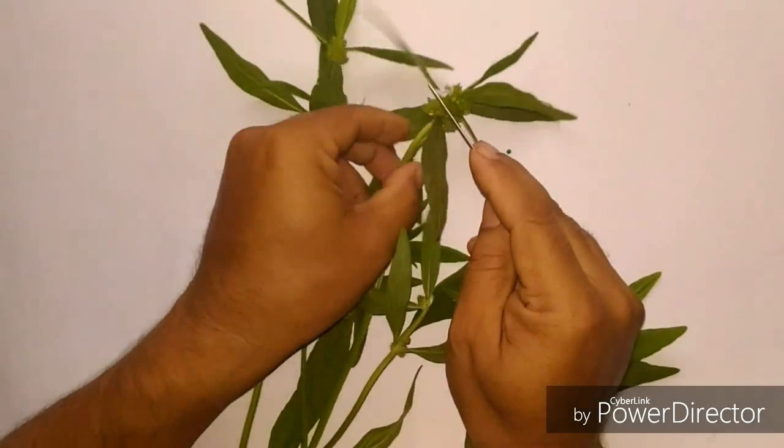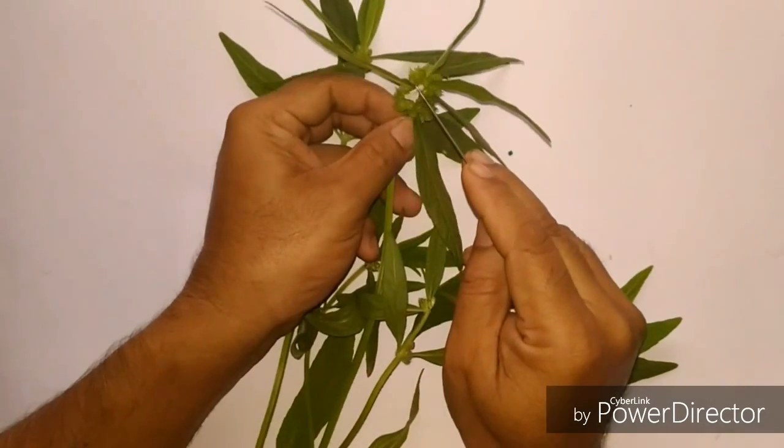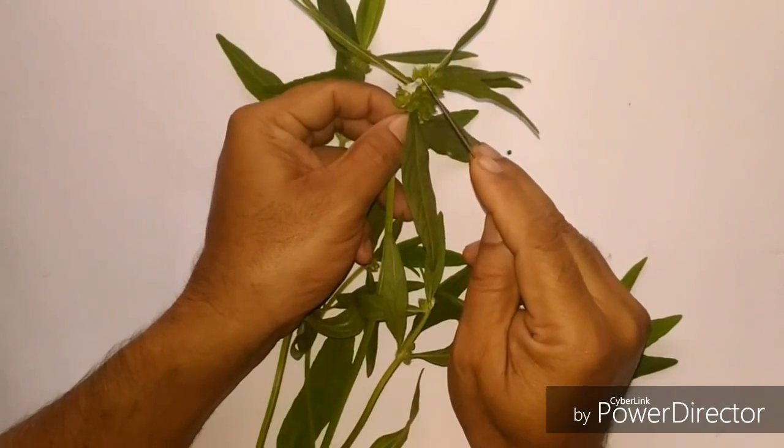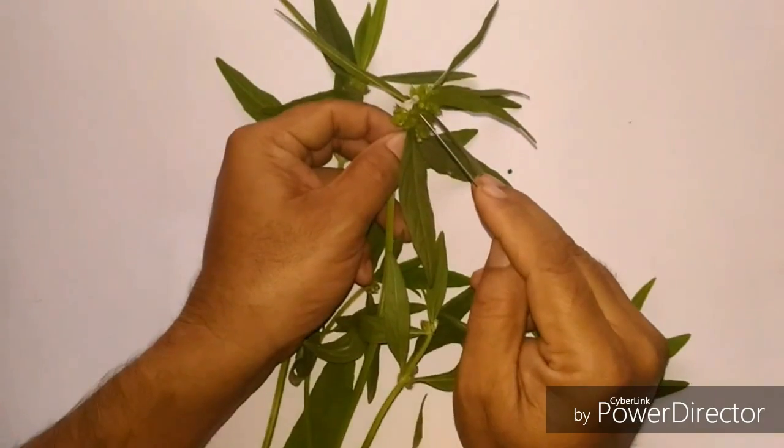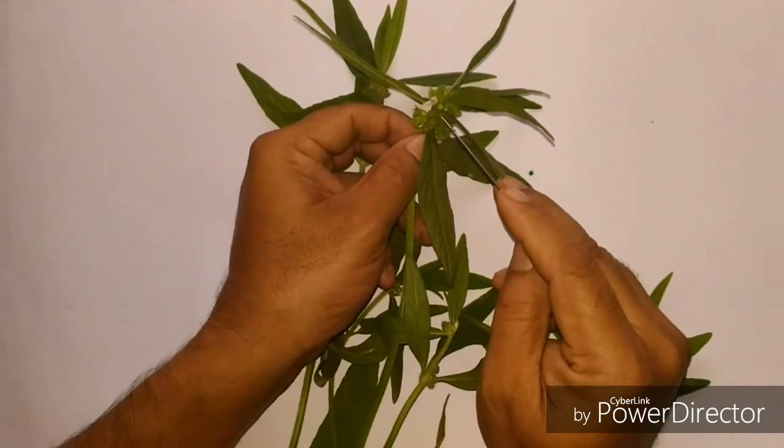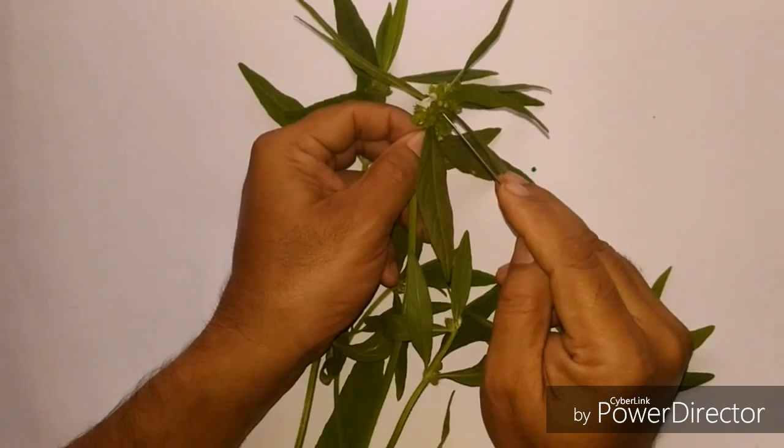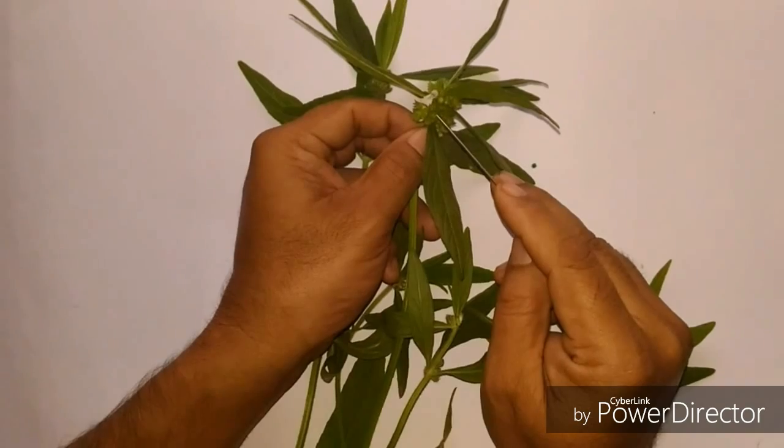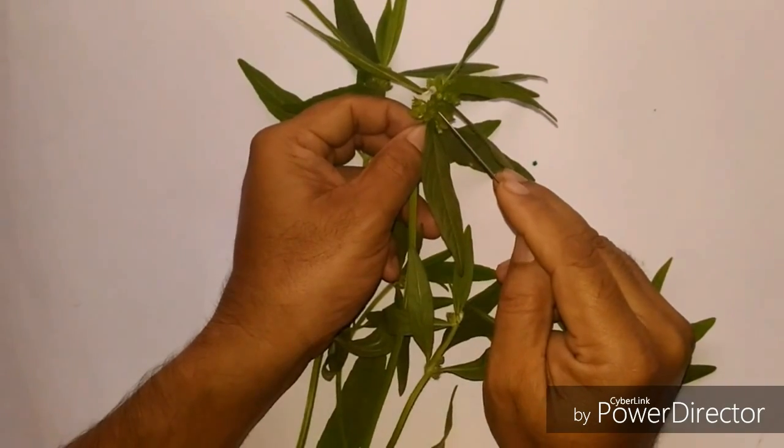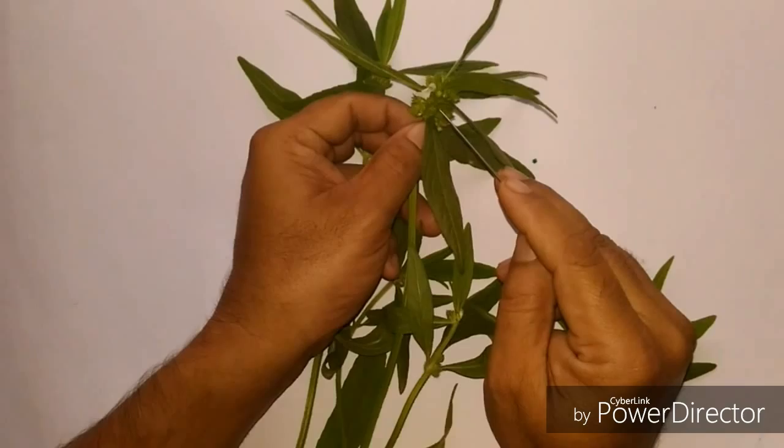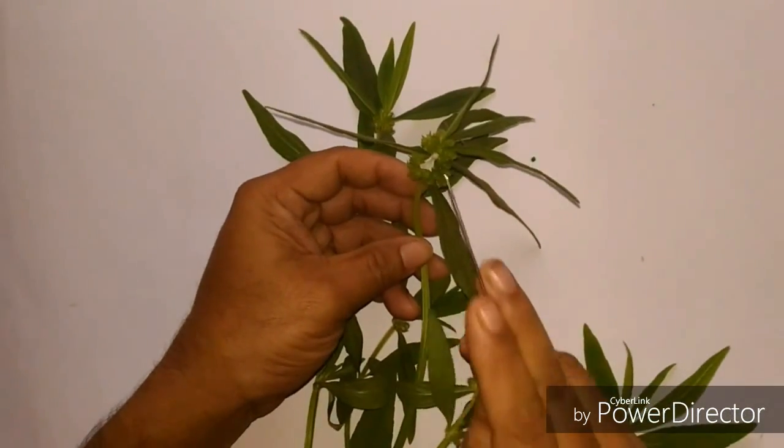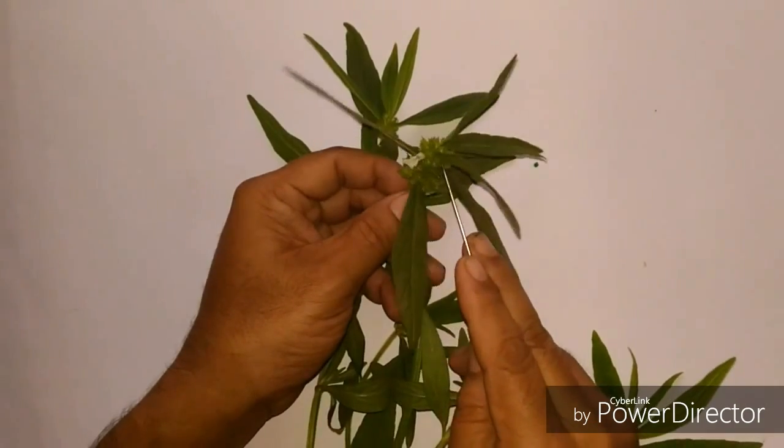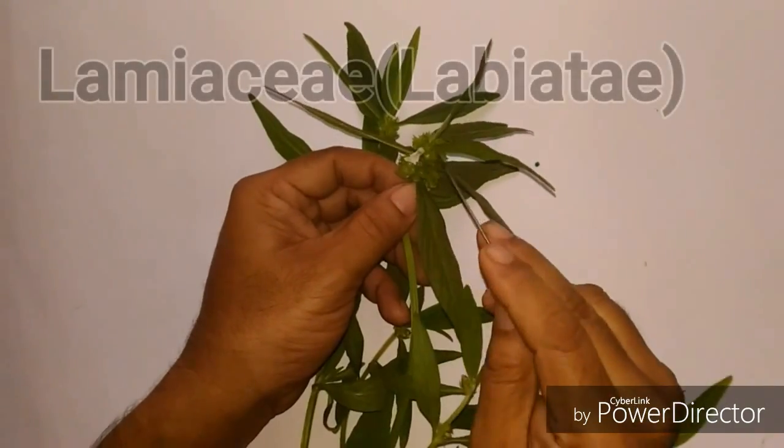Regarding the stamens or androecium, the stamens are epipetalous and didynamous. And the most striking feature of the gynoecium is the style is gynobasic. That is the style has been arising from the base of the gynoecium. And the fruits are nutlets.